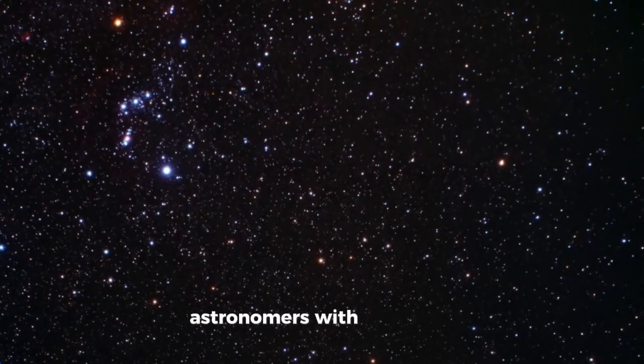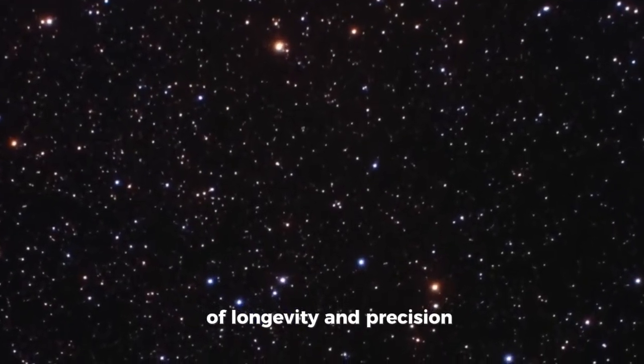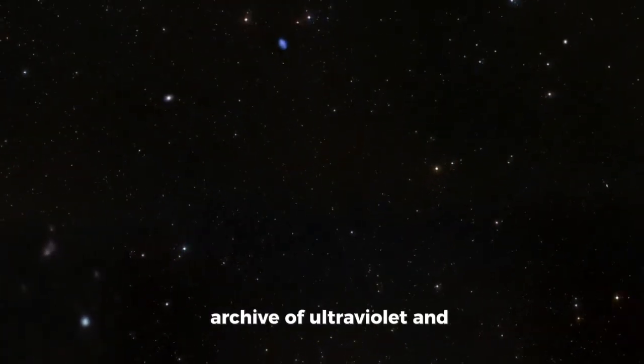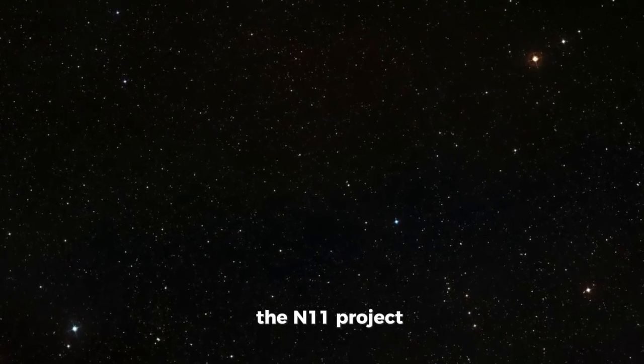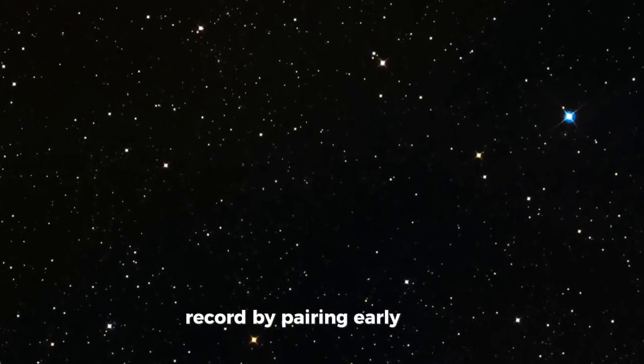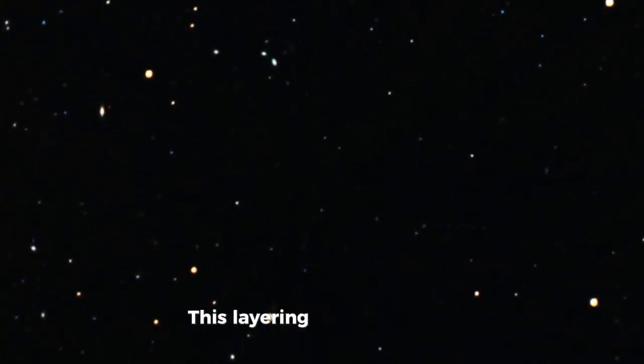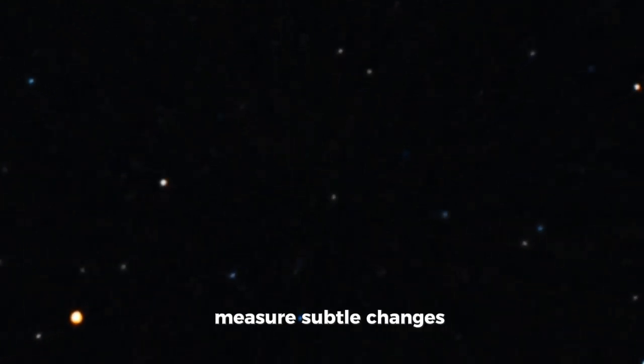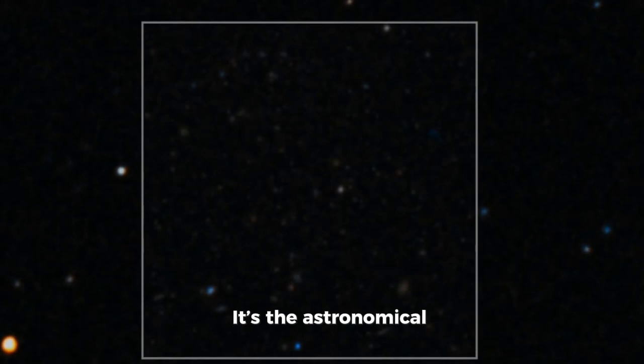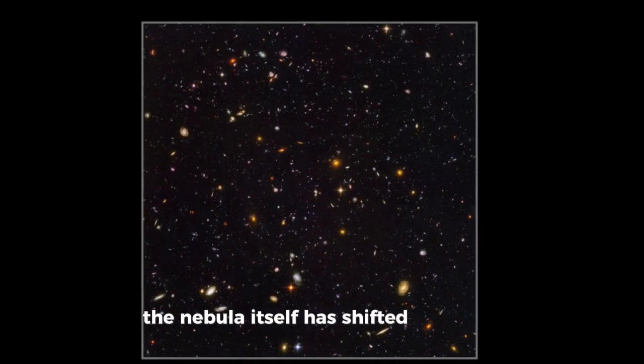Decades after launch, Hubble continues to surprise astronomers with discoveries like this because of its unique combination of longevity and precision. No other telescope has recorded such a consistent, high-quality archive of ultraviolet and visible-light data spanning years. In the N11 project, scientists took advantage of Hubble's long operational record by pairing early images from the advanced camera for surveys with newer captures from the wide-field camera. This layering allowed them to compare fine details, measure subtle changes, and distinguish structures that evolve slowly over time. It's the astronomical equivalent of comparing photographs from two generations, and noticing the nebula itself has shifted and grown.